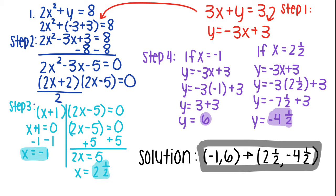Then, if x equals 2 and a half, you get y equals negative 3x plus 3. y equals negative 3 times 2 and a half plus 3. y equals negative 7 and a half plus 3. Then you finally solve for y equals negative 4 and a half.